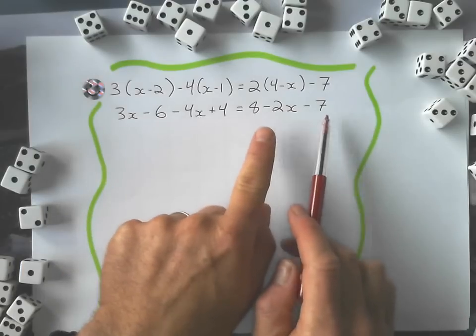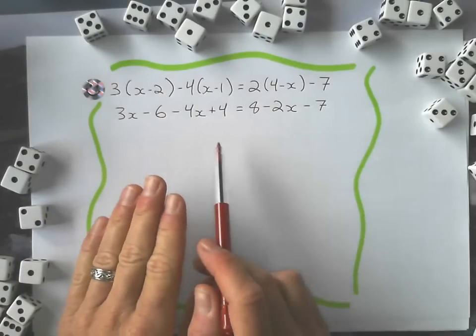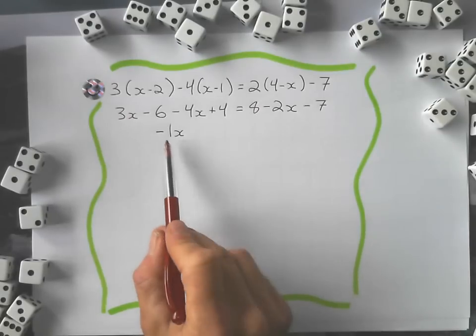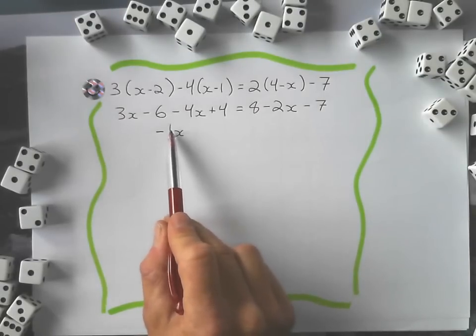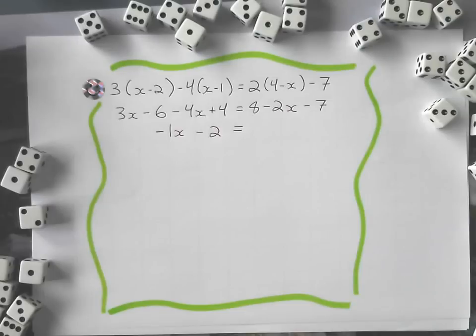Collect like terms on the left, collect like terms on the right. We clean the equation up before we start moving the terms around, before we start using the properties of equations. Let's collect like terms on the left: negative 1x, and that negative 1 coefficient, you don't really need that 1, but I'm just going to keep it in the working stage and that's fine. We'll deal with it later. And now I'll collect like terms on the right side.